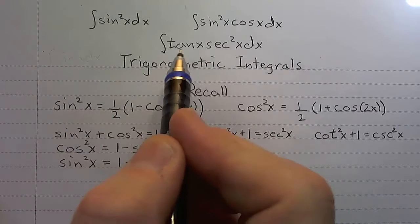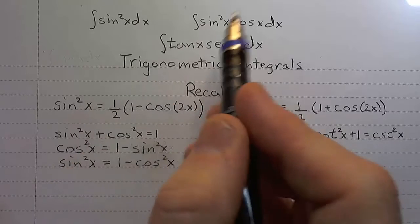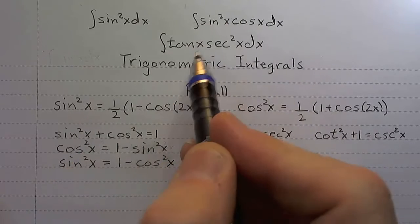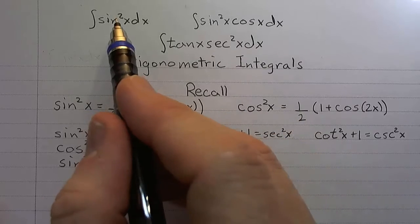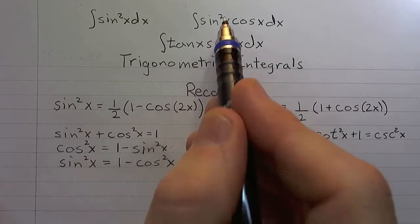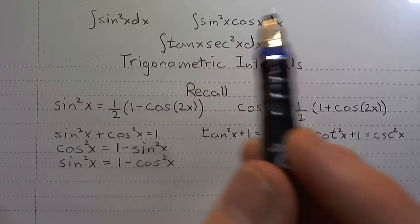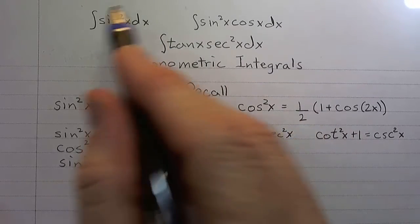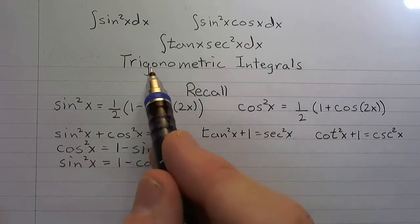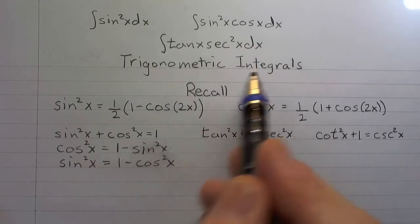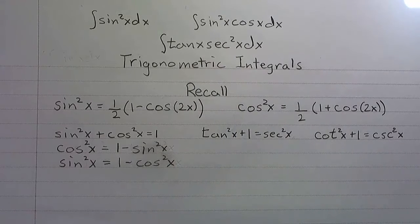Feast your eyes on these integrals: integral of sine squared x dx, sine squared x cosine x dx, tangent x secant squared x dx. These are trigonometric integrals, and we're going to look at some approaches to finding the antiderivatives for these. Integrals that look like this we'll refer to as trigonometric integrals.